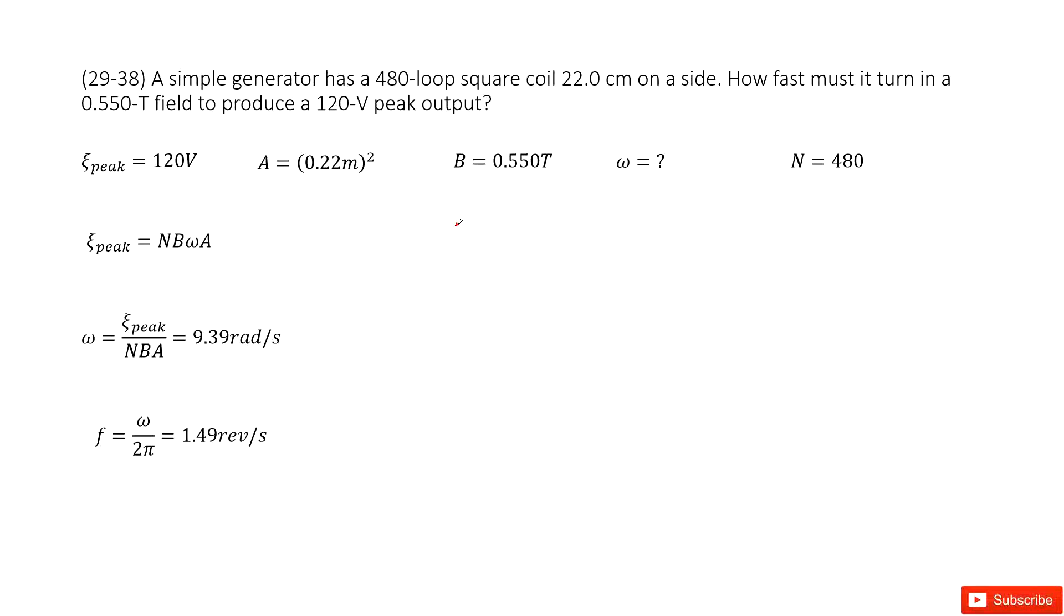Now let's see what quantity is given. We have the peak output voltage as is 120 volts. We have the cross-sectional area, side squared, side length squared, so 0.22 meter squared. And we have magnetic field. We have how many turns for this loop.